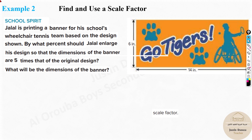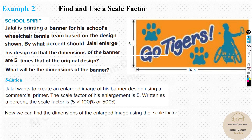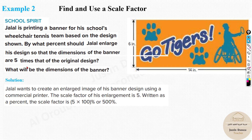Jalal is printing a banner for a school's wheelchair tennis team. By what percent should Jalal enlarge his design so that the dimensions of the banner are 5 times that of the original design? They haven't given a scale factor directly — they said '5 times.' Five times means the scale factor is 5, or equivalently 500%. So you can simply multiply all dimensions by 5.